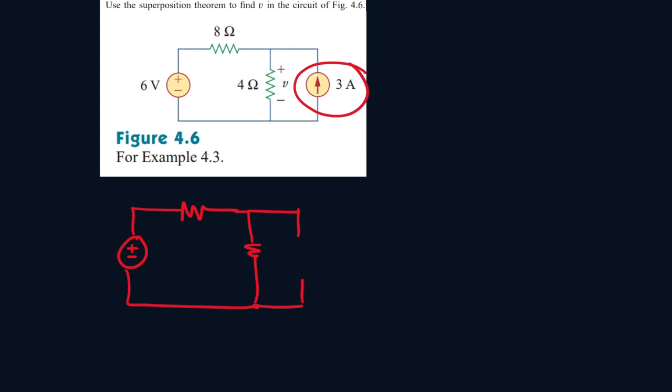When you turn it off, you get an empty wire here with no current traveling to this wire because it's open. So the circuit looks something like this. We had 8 ohms and we have 4 ohms and 6 volts. And we're trying to find V at the 4 ohm resistor.